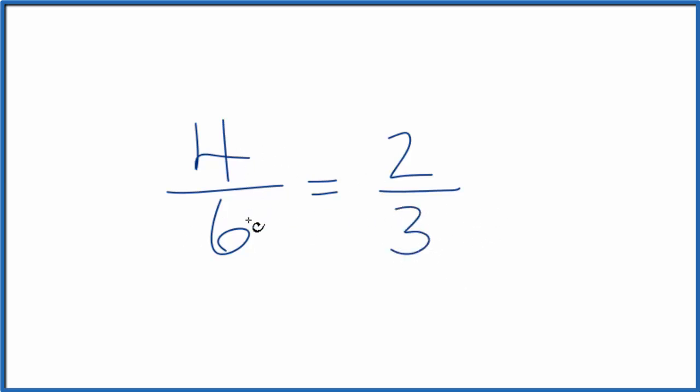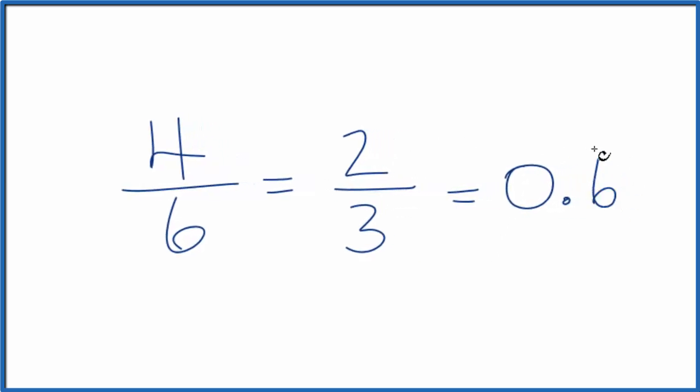If we divide four by six or two by three, we end up with zero point six, and the six repeats. So the value is the same, just the numerator and the denominator are different.